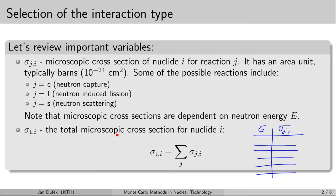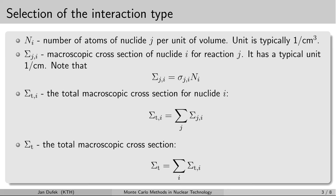The total microscopic cross-section for a specific nuclide combines all the microscopic cross-sections for that nuclide across all reactions. Another key quantity is the concentration of the nuclide, denoted by capital N, which gives the number of atoms of the specific nuclide per unit volume — typically in units of 1 over cubic centimeter.